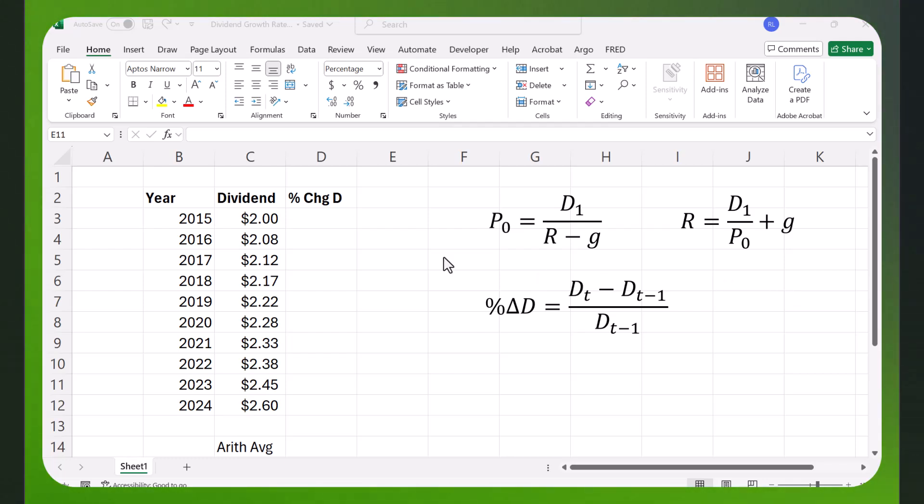Over here, I have some dividends, $2.00, $2.08, $2.12, etc. that a company has paid over a 10-year period. And I'd like to calculate G.